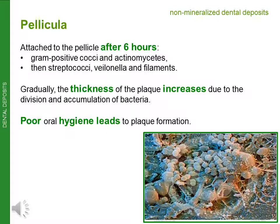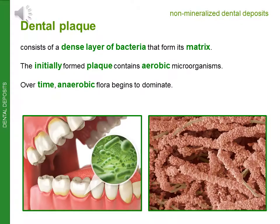Microorganisms attach to the pellicle after six hours — first gram-positive cocci and actinomycetes, then cocci, Veillonella, and filaments. Gradually the thickness of the plaque increases due to division and accumulation of bacteria. Poor oral hygiene leads to plaque formation. Dental plaque consists of a dense layer of bacteria forming its matrix. Initially formed plaque contains aerobic microorganisms; over time, anaerobic flora begins to dominate.